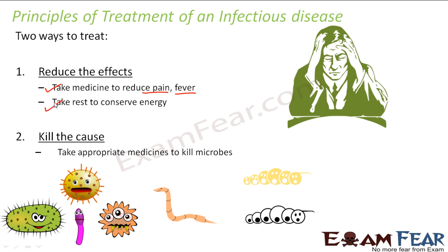The second principle is to kill the cause. Sometimes you have a headache, take a painkiller, and the pain goes away — but you haven't addressed the actual cause. The pain exists because your body's cells are fighting the cause. If your immune system wins, you feel fine; if the fight continues, the pain returns and you may end up suffering from the disease.